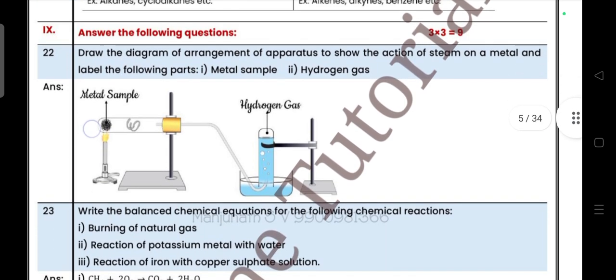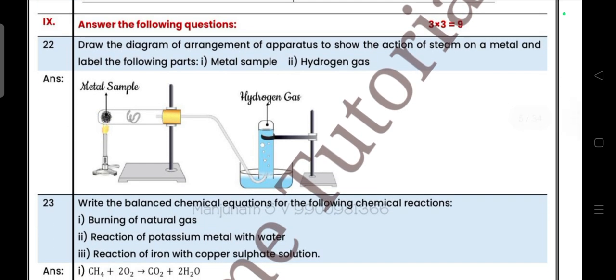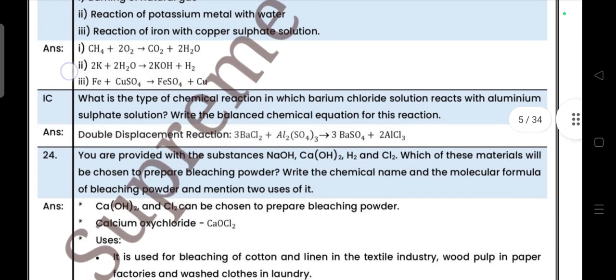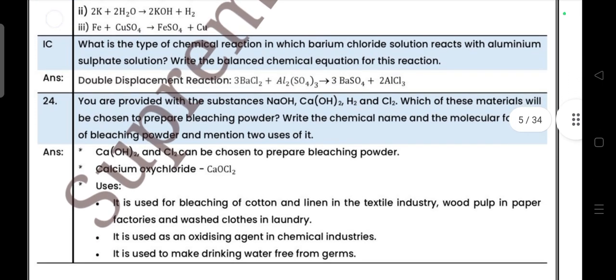Next, three mark question. Draw the diagram of arrangement of apparatus to show the action of steam on metal and label the following parts: metal sample and hydrogen gas. Write the balanced chemical equation for the following chemical reaction. What is the type of chemical reaction in which barium chloride solution reacts with aluminum sulphate solution? Write the balanced chemical equation for this reaction.